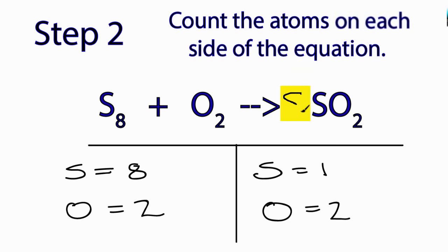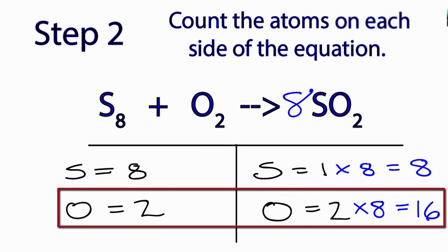So if I put an eight here, that means eight times the one sulfur. That'll give me eight sulfurs. And now my sulfurs on both sides are eight. But this eight here is also times the two oxygens. And that gives me 16 oxygens. So I've fixed the sulfurs, but the oxygens aren't balanced.